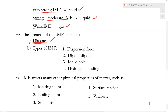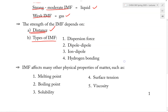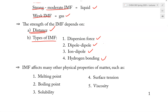The second factor is the types of IMF. It turns out there are different ways how two molecules may interact with each other, and we refer to these as the different types of IMF. These are: first, the dispersion force; second, the dipole-dipole force; third, the ion-dipole; and lastly, hydrogen bonding. These are the four major and most important types of IMF that exist among different molecules, and in the next lecture video we will go over each of these types in greater detail.